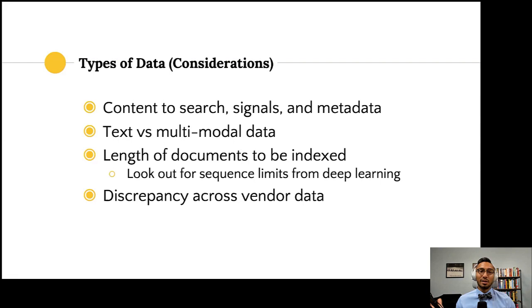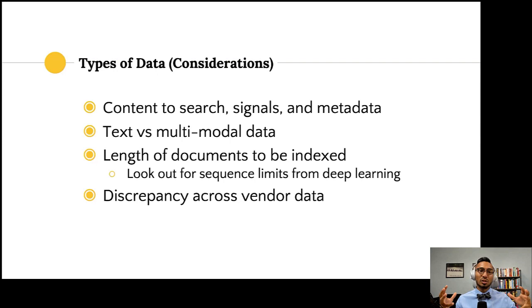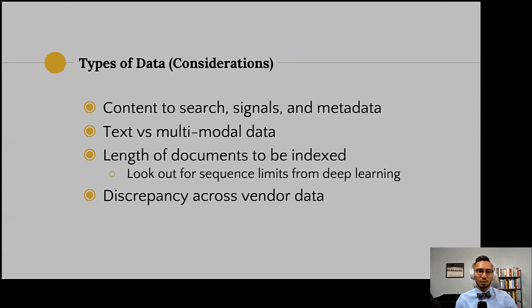Think about text versus multimodal data. If indexing patent documents, don't just look at text — images can also improve search. Document length becomes a bottleneck with deep learning approaches, as there are sequence length limits to consider. In e-commerce with multiple vendors, watch out: vendors intentionally define their catalog in specific ways so their products rise to the top in lexical search. In multi-vendor environments, the data is often extremely dirty — sometimes intentionally.